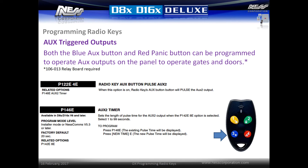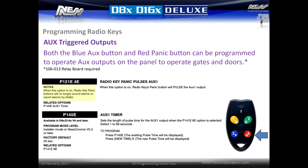Both the blue auxiliary button and red panic button can be programmed to operate auxiliary outputs on the panel to operate gates and doors. Note that the optional 106-013 relay board is required for dry contact outputs. To set the blue auxiliary button to pulse an output, enter location p122e and activate option 4e. To set the time for this output to pulse, enter option p146e and then enter the time in seconds — by default the pulse time is 20 seconds. To reprogram the red panic button as an auxiliary output button, enter location p121e and activate option 4e. To set the pulse time for auxiliary 1, enter location p145e and then enter a new time followed by E.